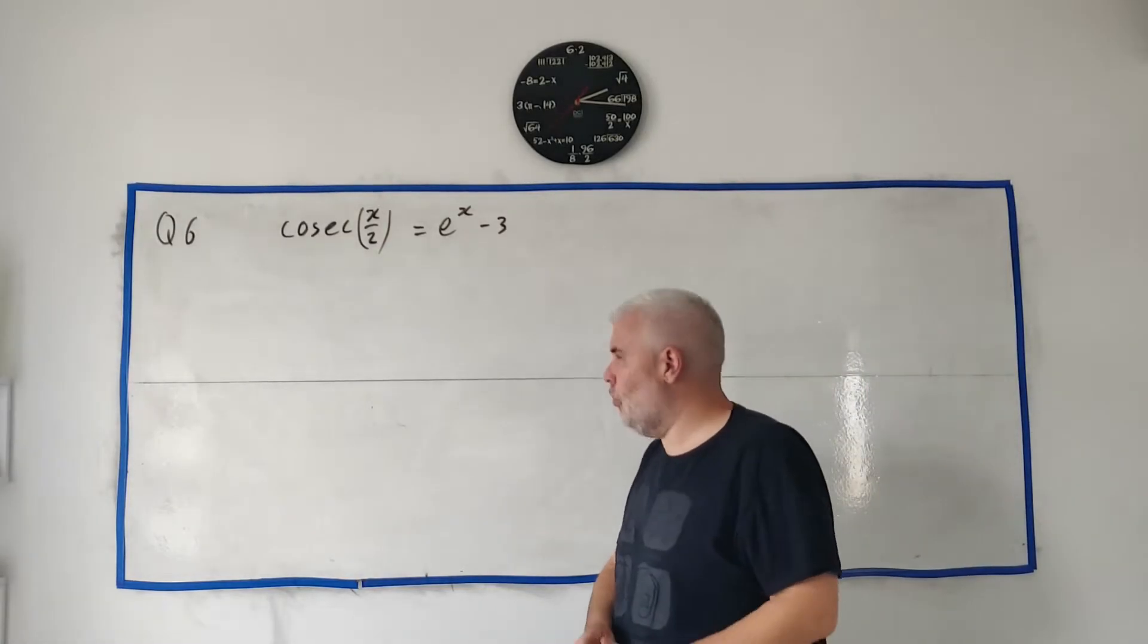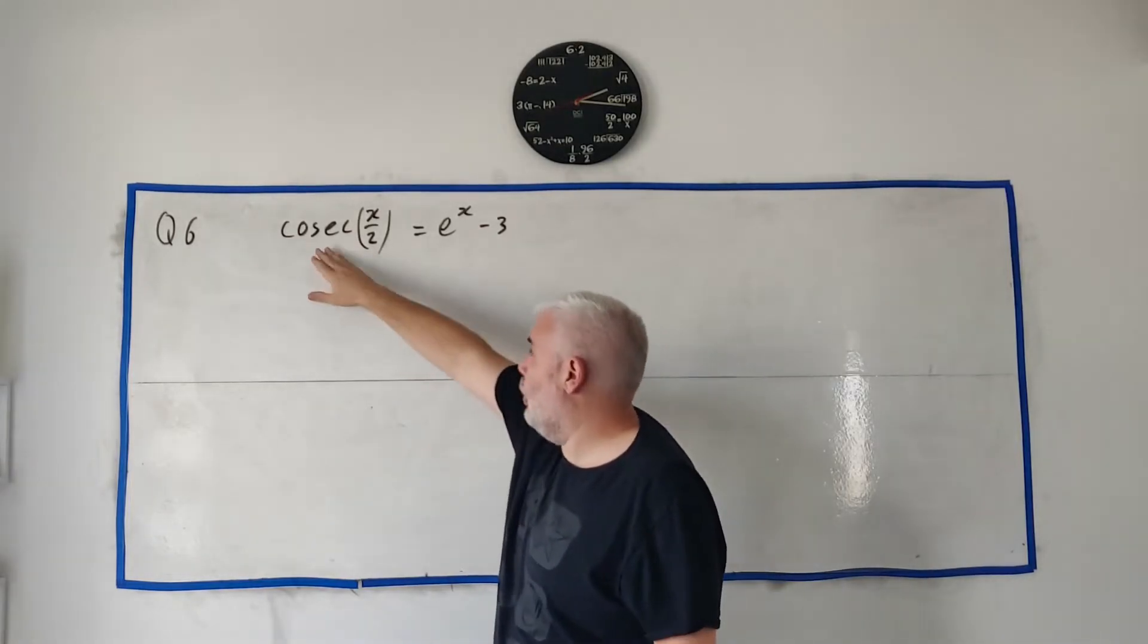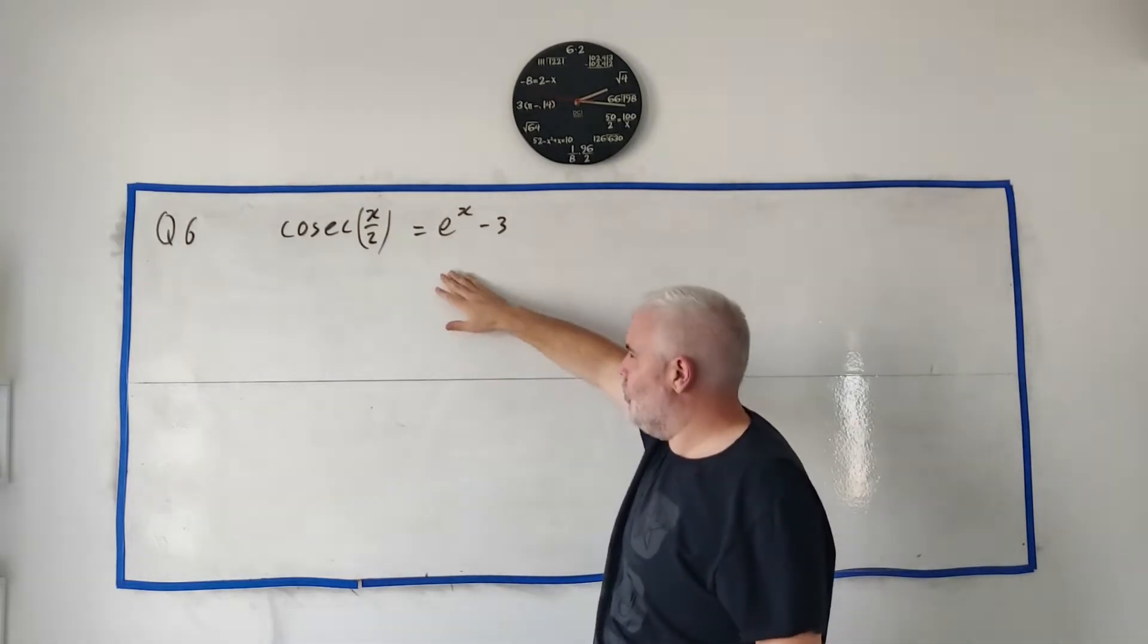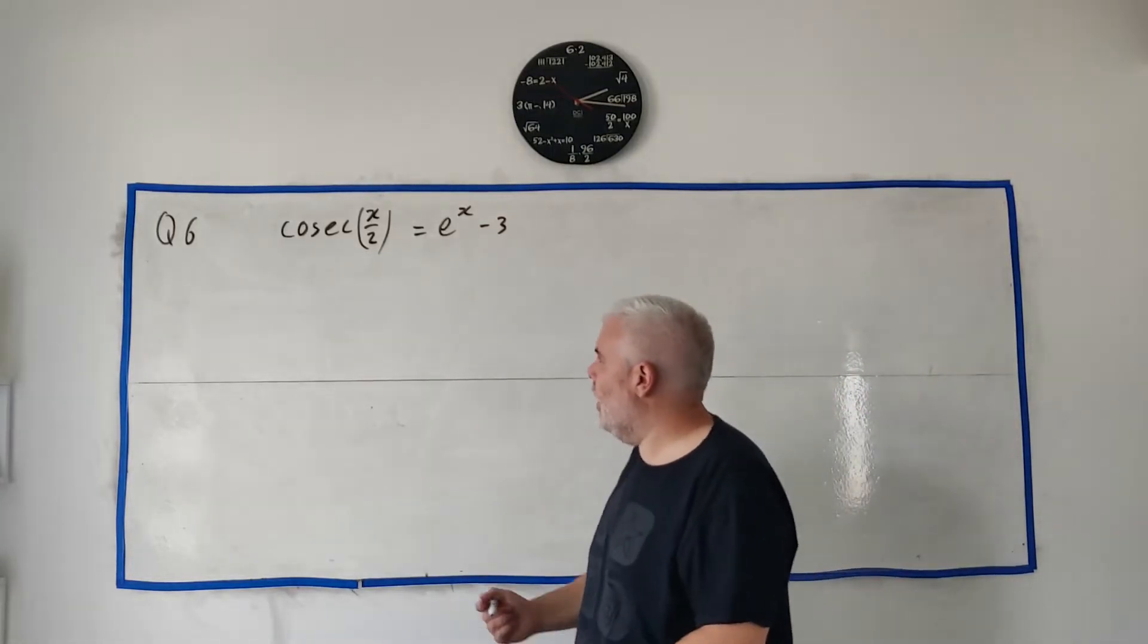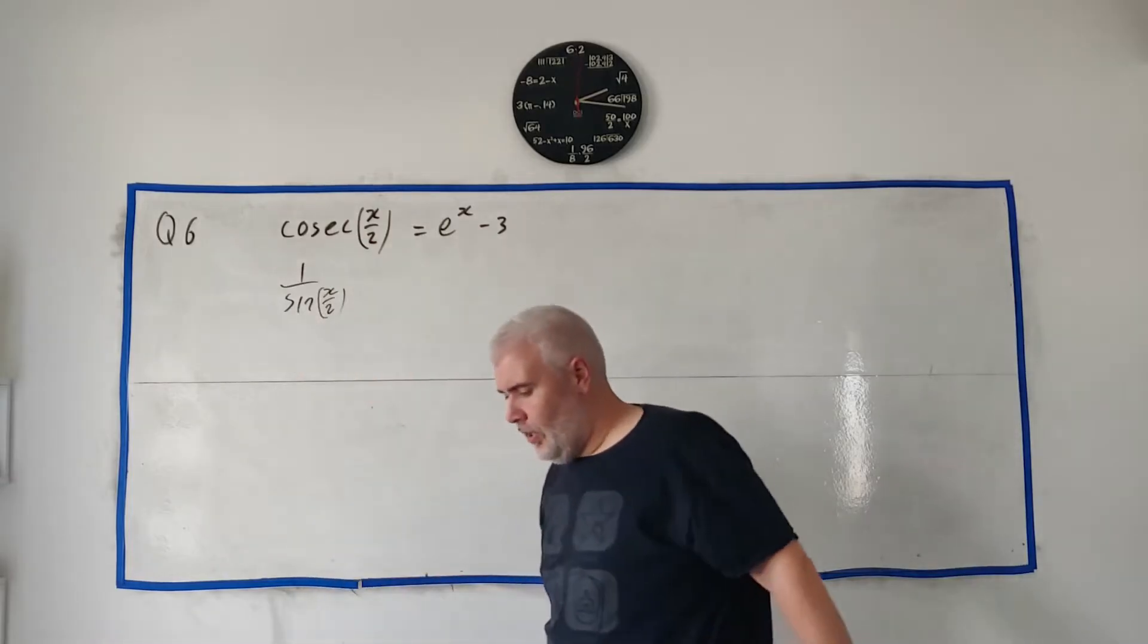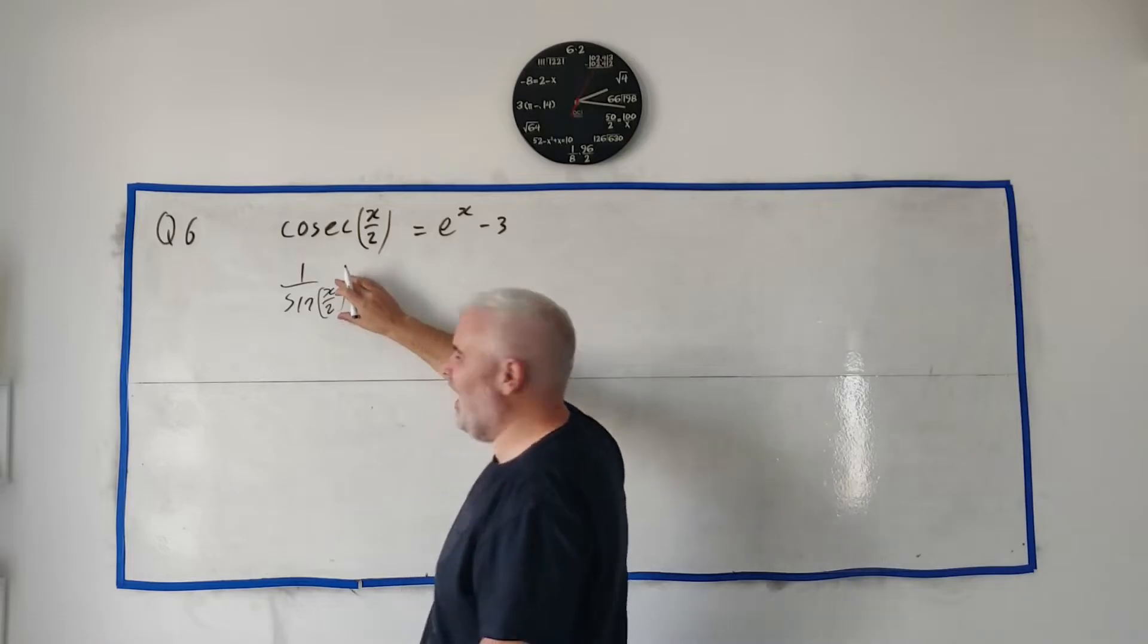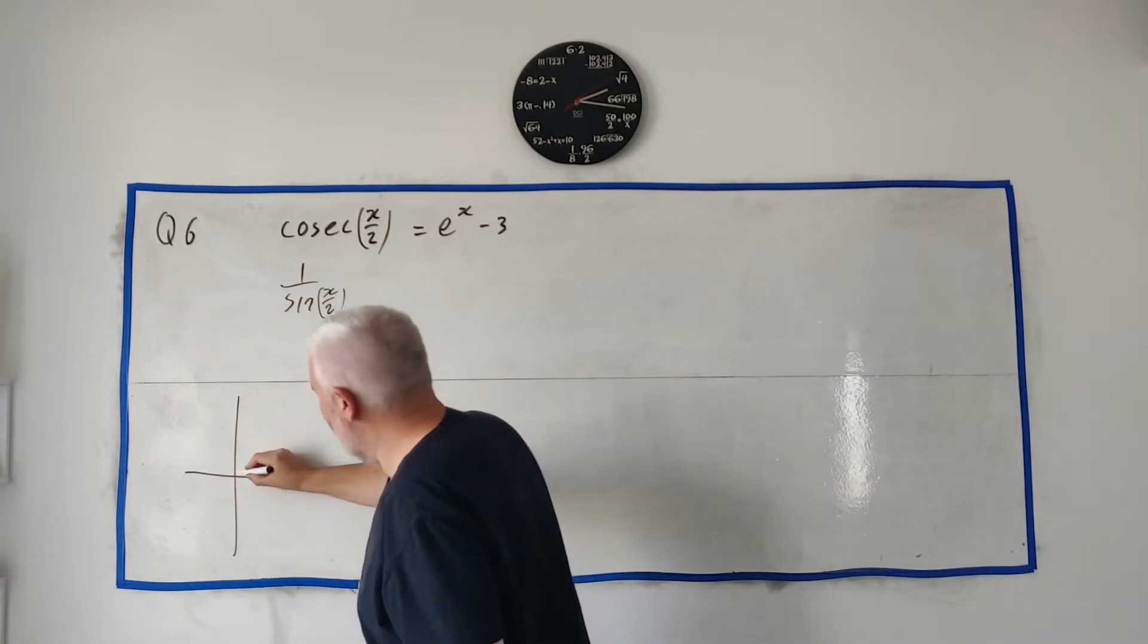There's only two marks for this. So you are expected to be able to just draw this straight away, a cosec function, and you're expected to be able to draw an e to the x function. I'll do it a little slower. I'll try and show you where a cosec function comes from. And to that point, it comes from being 1 over sine x, or in this case sine x over 2. So I'm going to draw a few functions here. First of all, I'll just draw sine.